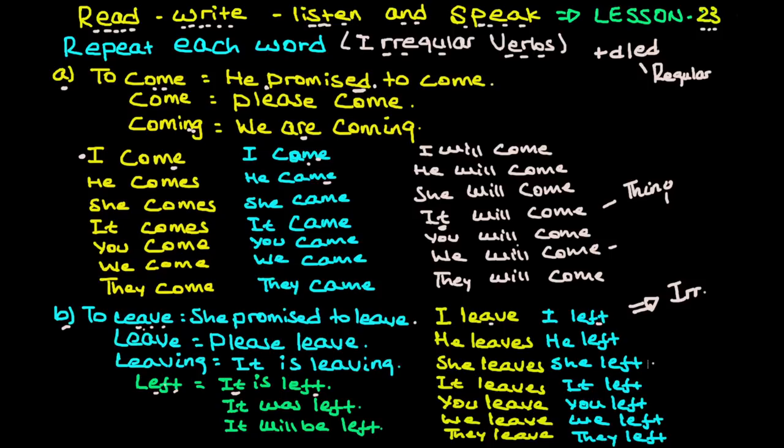Now we'll practice repeating each word and phrase. I'll say it first, then you repeat after me. We'll do this exercise two or three times to help you remember. Listen carefully and repeat each irregular verb form.